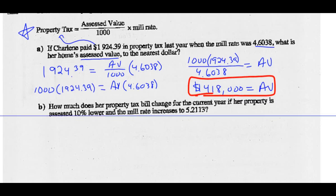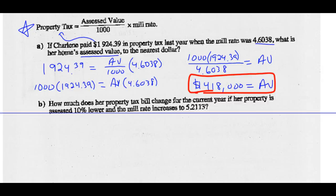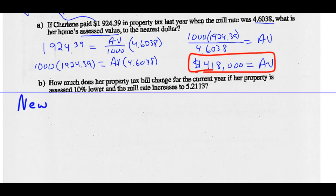How much does a property tax bill change for the current year, if a property is assessed 10% lower and the mill rates increased to 5.2133? Let's figure out the new assessed value. Step one, let's figure out the new assessed value, 10% lower than what that one is. So I've got $418,000. And I'm decreasing 10%. So if you think about that, that means I'm really keeping 90% of it. I'm keeping 90% of the cost. We're losing 10%, so I'm going to keep 90% of that cost. So I multiply it by 0.9. So that gives me a new property value of $376,200.